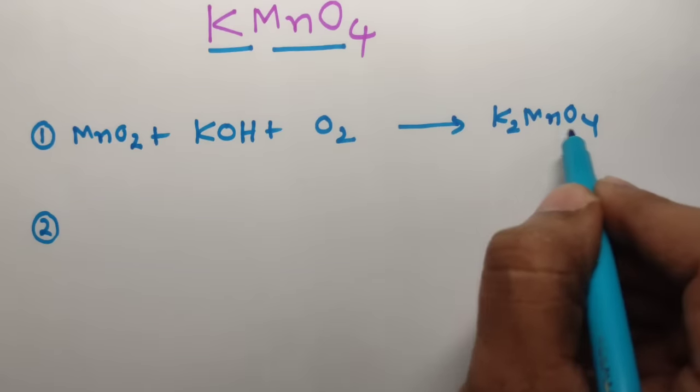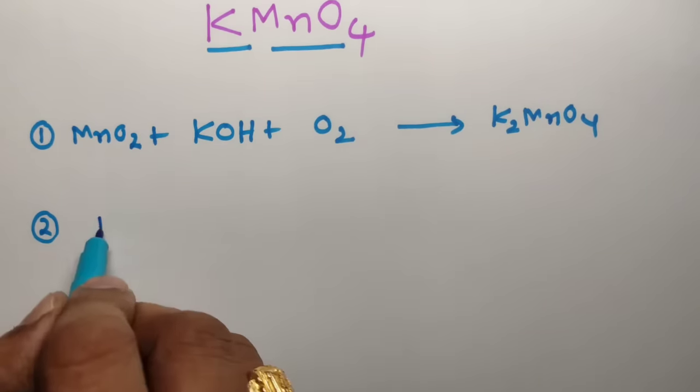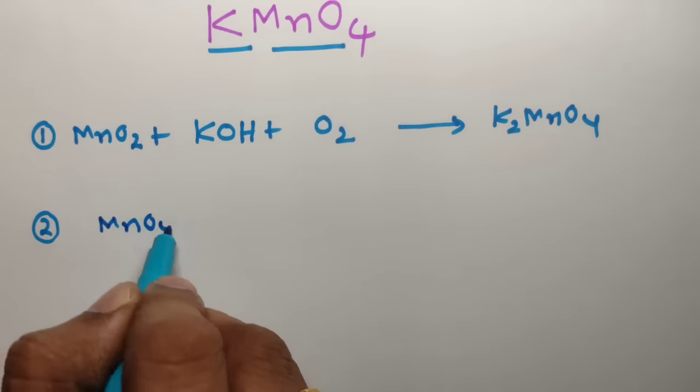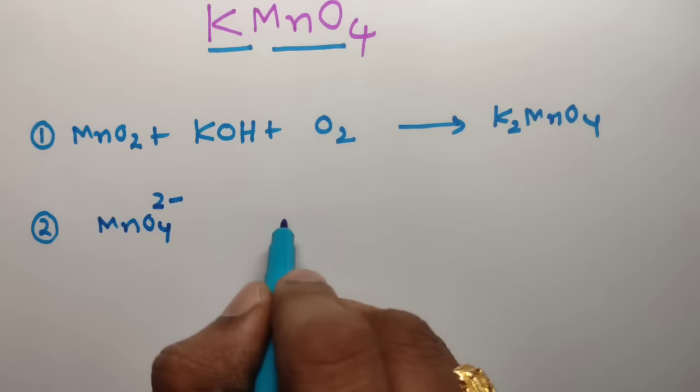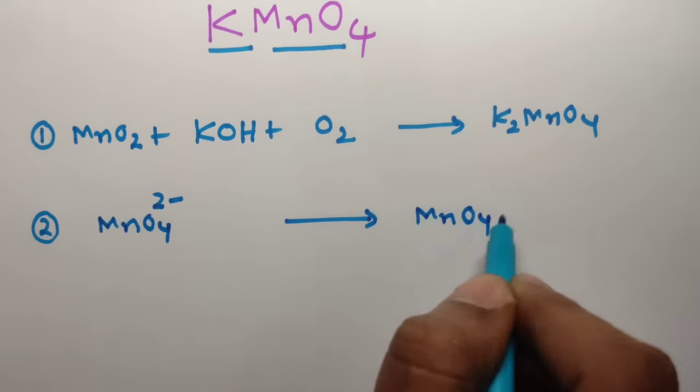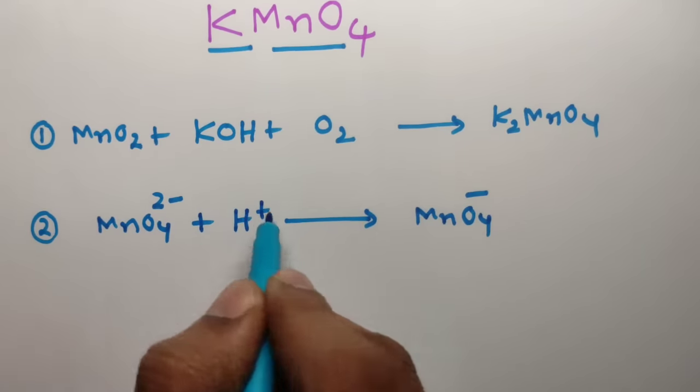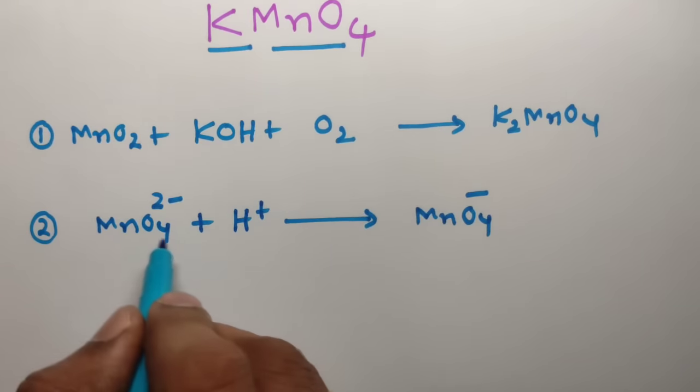This gives two potassium ions and MnO4 2- is there. So you can write MnO4 2-. This MnO4 2- is converted into MnO4- in presence of acidic medium H+.